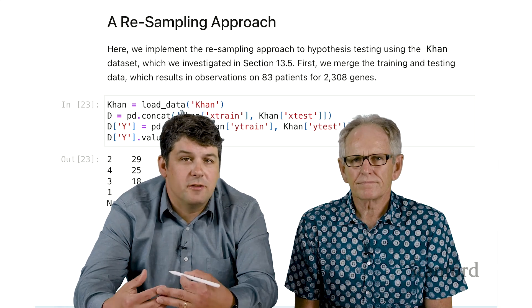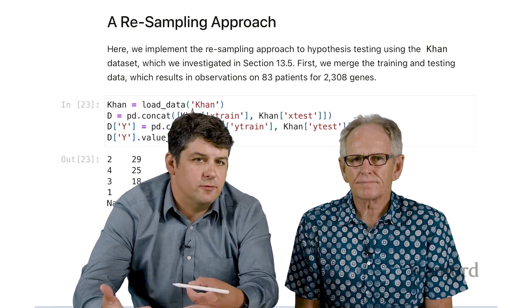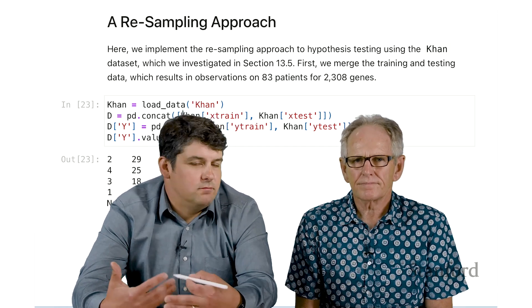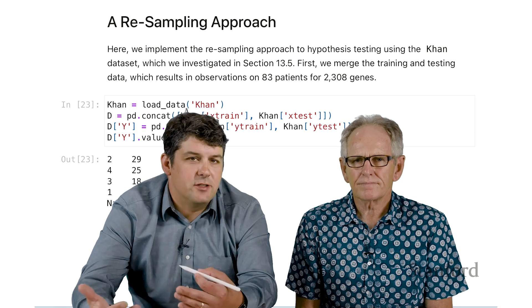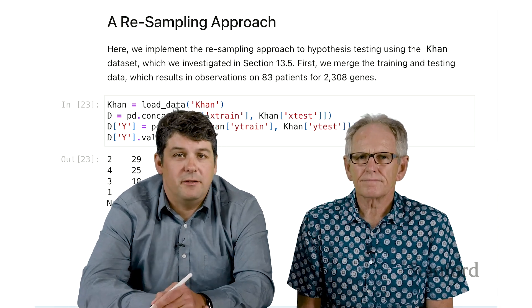We're going to build up a null distribution from the data itself where we assume the null hypothesis is true. And we can use this distribution as a substitute for the t-table that the t-test functions use to construct the p-value.